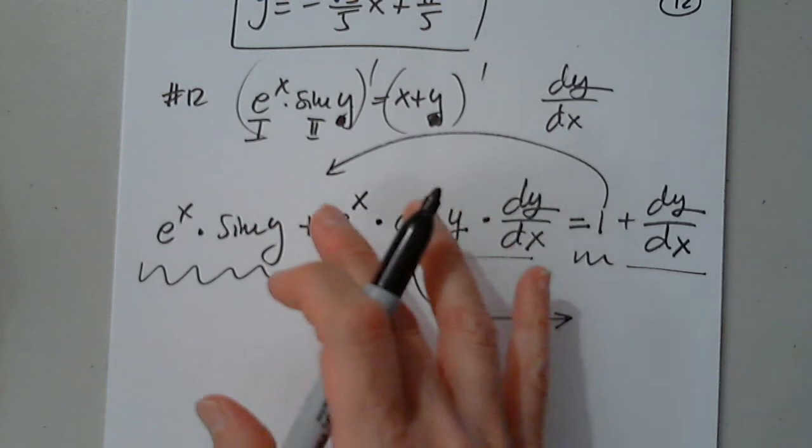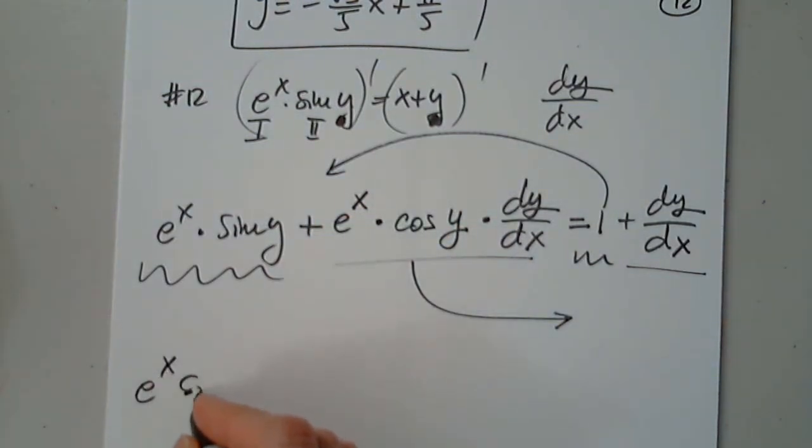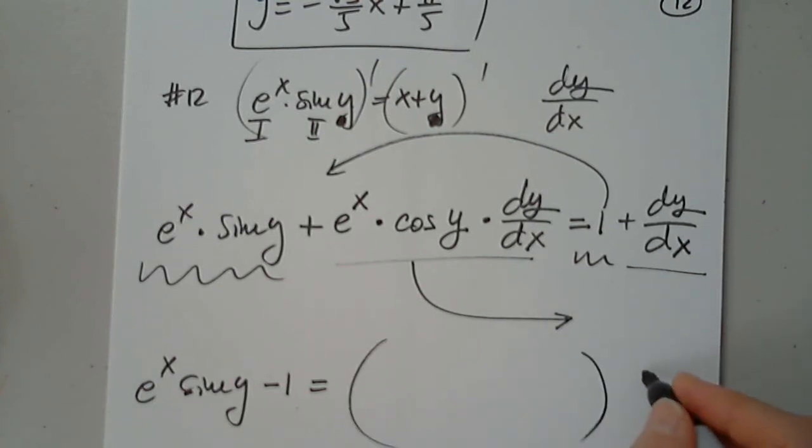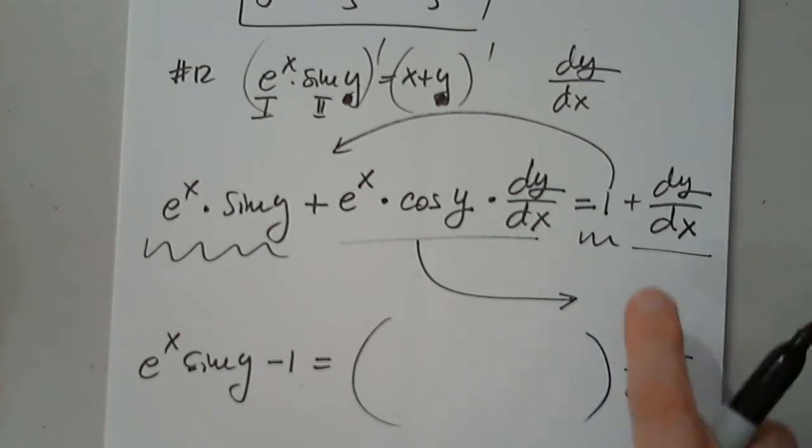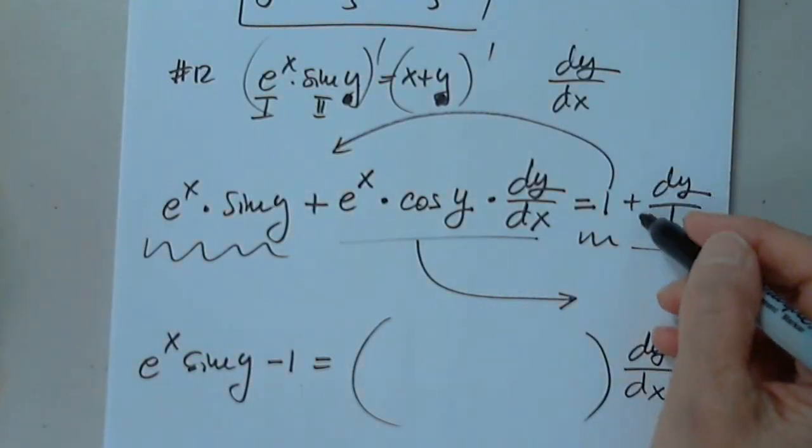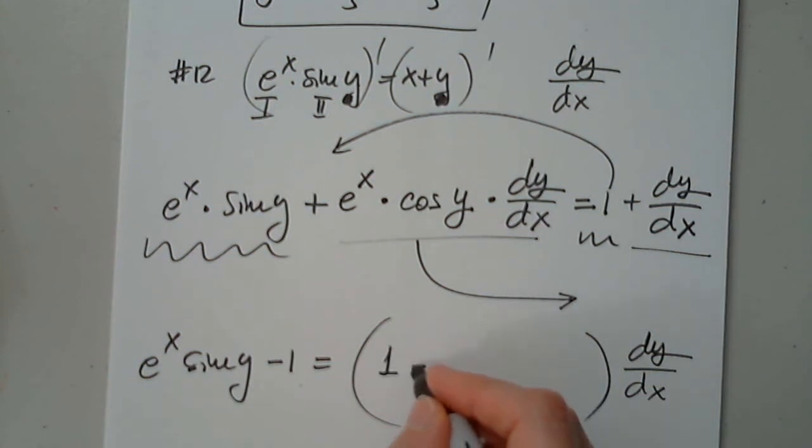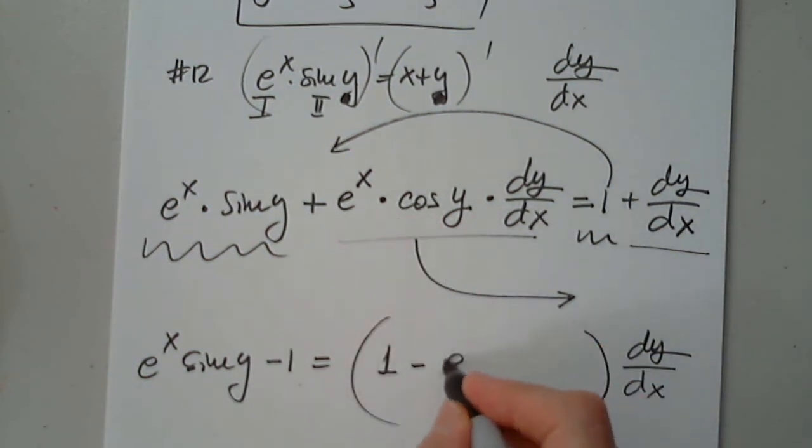So I move one. So e to the x sine y minus one equals, and now because I don't want to write it twice, you don't have to do this, but I recommend it. So the term here is one, but minus this piece, e to the x cosine y.